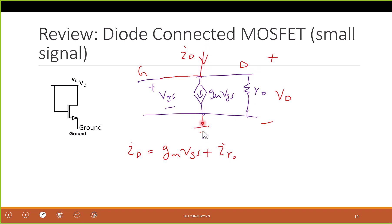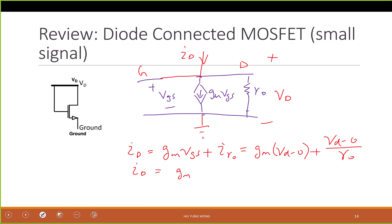Whatever comes here will go here and to the ground. What is Vgs by definition? Vgs is Vg minus Vs. But Vg is Vd, so this is just Vd minus zero. How about the current through R0? Well, Ohm's law — Vd divided by R0, which is (Vd minus zero) over R0. Then collect the terms: ID equals (Gm plus one over R0) times Vd.